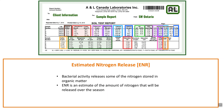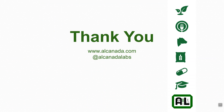Lastly on the report is the ENR, or estimated nitrogen release. Bacterial activity helps release nitrogen stored in the organic matter, and the ENR is an estimate of the amount of nitrogen that will be released for plant use over a growing season. And that's it for understanding your soil test report — thank you.